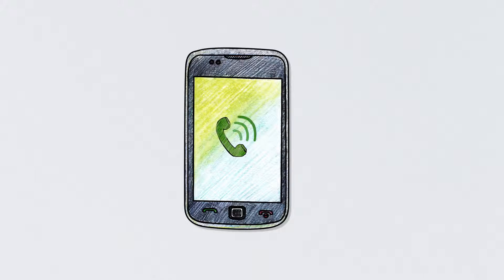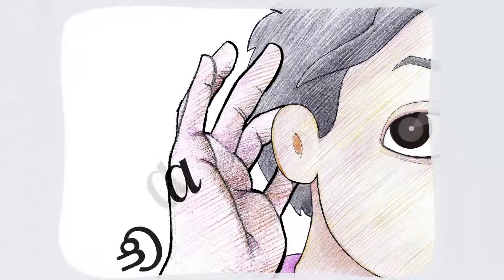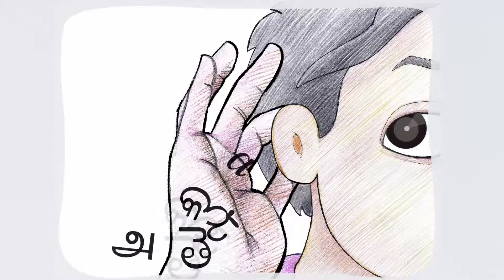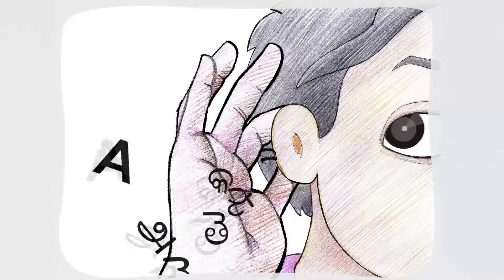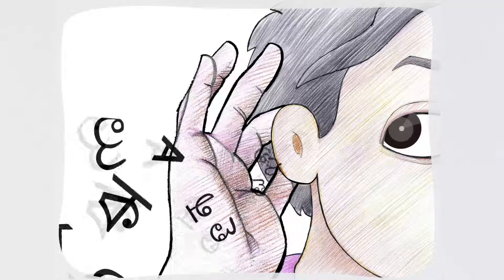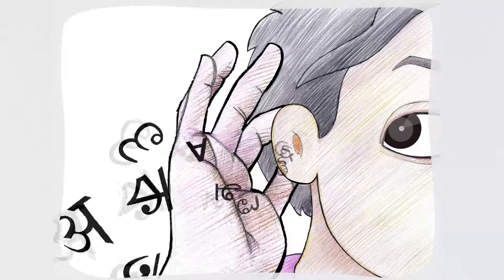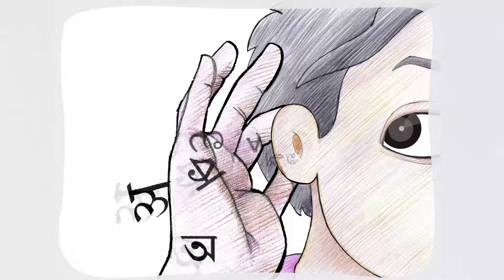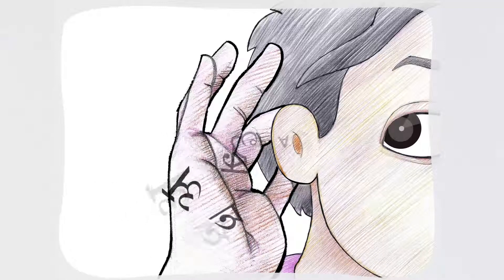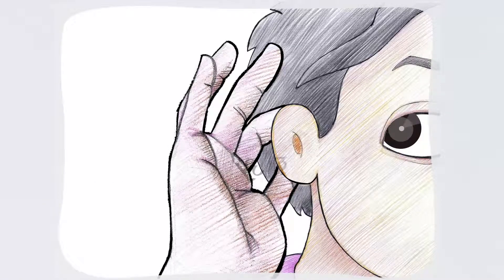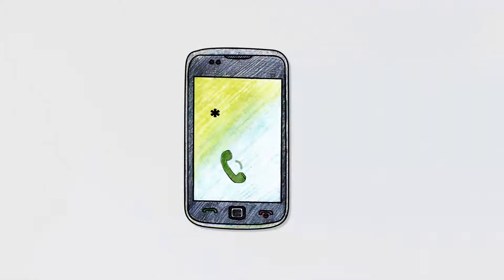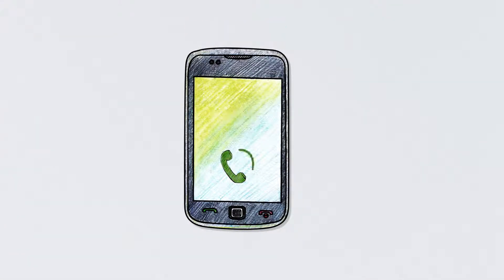You can also opt for our Interactive Voice Response solutions. With IVR, you can get all account-related information and service details anytime, anywhere. This solution is offered in over 11 languages, including English and Hindi. Dial *222 for postpaid or *333 for prepaid and follow the instructions.